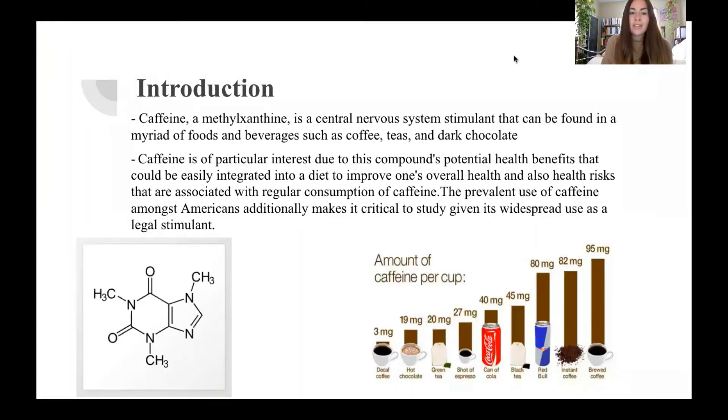Introduction. So caffeine, a methylxanthine, is a central nervous system stimulant that can be found in a myriad of foods and beverages such as coffees, teas, and dark chocolates. Caffeine is of particular interest due to this compound's potential health benefits that can be easily integrated into one's diet to improve their overall health and also remove health risks that some are more susceptible to than others. The prevalent use of caffeine amongst Americans additionally makes it critical to study given its widespread use as a legal stimulant.